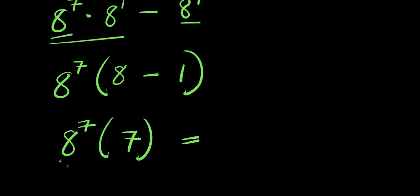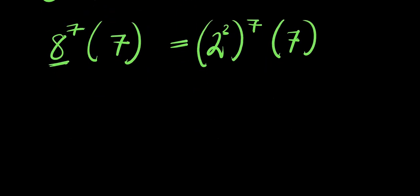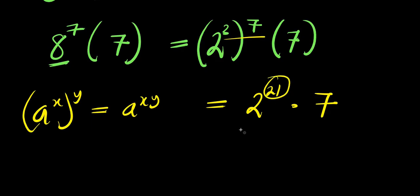Now this equals: 8 is simply 2^3, and this is raised to the power of 7, times 7. Now if you have (a^x)^y, this equals a^(xy). So 3 times 7 is 21, giving us 2^21 times 7. I can express 21 as 20 plus 1, so I have 2^(20+1) times 7.